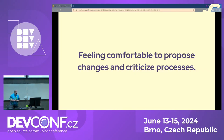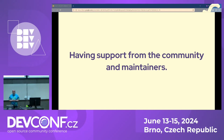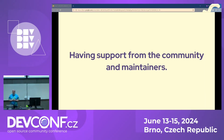Let's quantify this a little more. One big thing: feeling comfortable to propose changes and criticize processes. When you're in a collaboration, do you feel comfortable to say, 'I think we're doing this wrong,' or 'This meeting is way too long, can we make it shorter?' If you do, you're probably in a very healthy collaboration. If you don't, that's a sign the collaboration maybe is becoming unhealthy. Likewise, do you have support from the community and its maintainers — not a rubber stamp, but the ability to bring your ideas and opinions to them openly? That's another marker of influence.